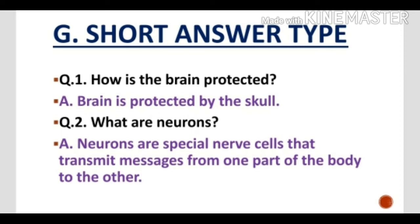Question No. 2: What are neurons? The answer is neurons. These are the special nerve cells that transmit messages from one part of the body to the other. They are also called nerve cells.